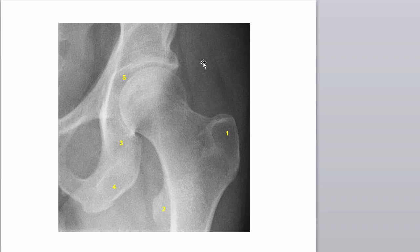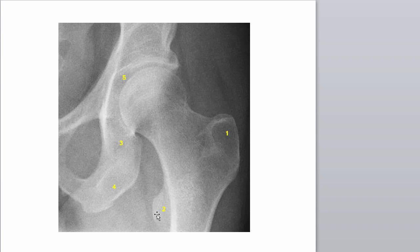So this is just a close-up. Again, this is the head of the femur, and number five goes all the way around here — that's the acetabulum. Number four again — ischial tuberosity. Number one — greater trochanter. The neck is right here. And there's the lesser trochanter.